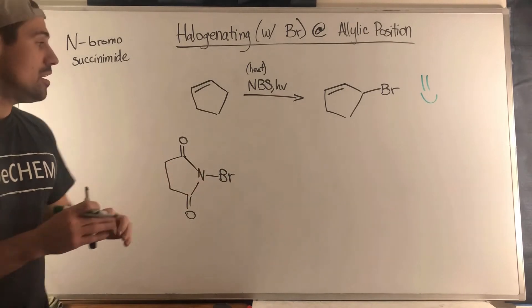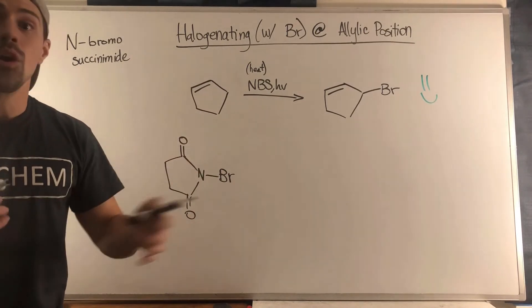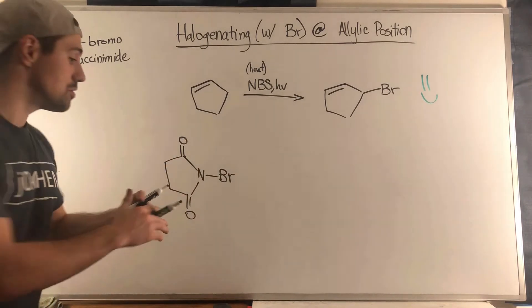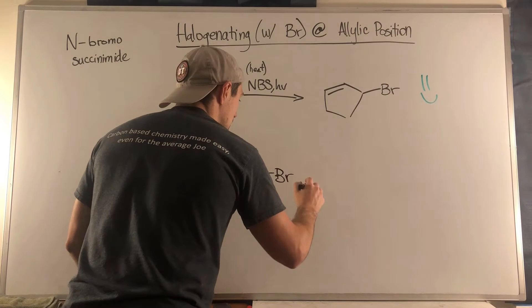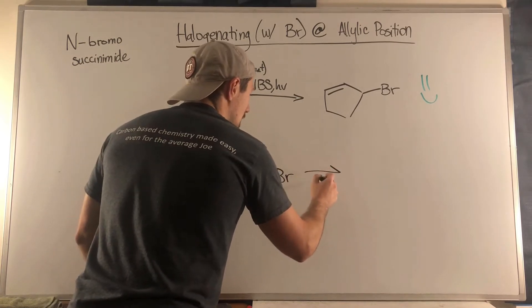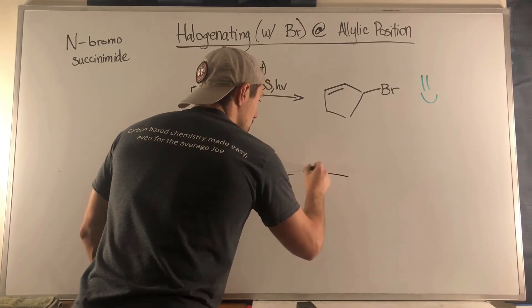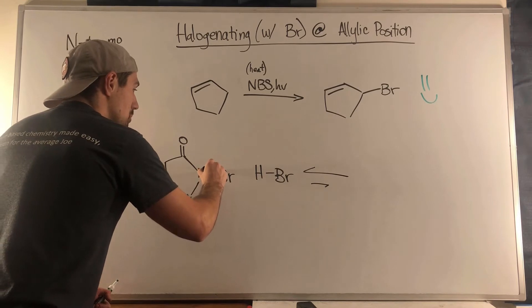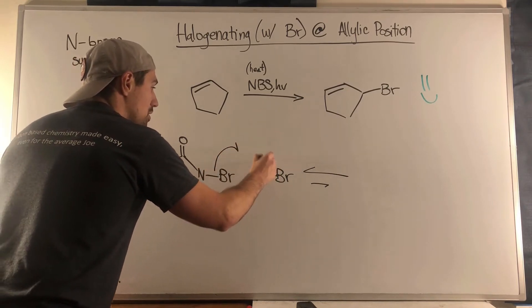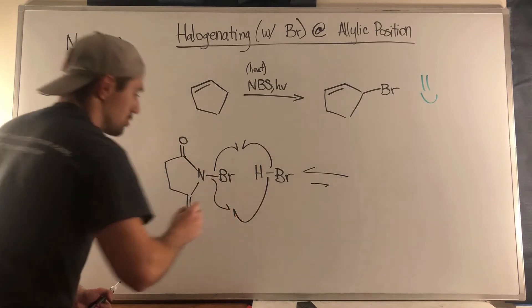Typically what you can do is you can sprinkle in some HBr or just something that will help do what I'm about to show you. If you have some type of HBr or something like that, you have kind of like an equilibrium, and the equilibrium is very slight to where you have the bromine going with the bromine and the hydrogen going with the nitrogen.